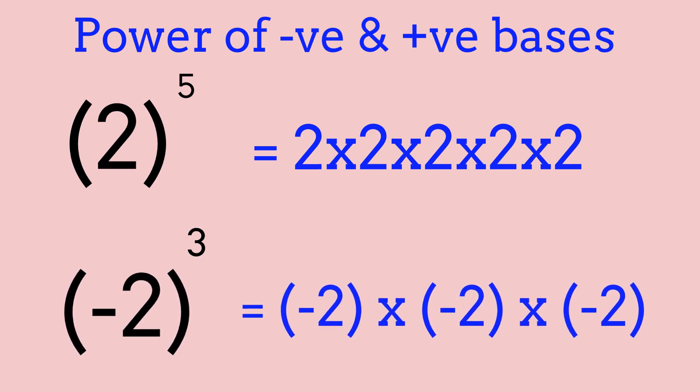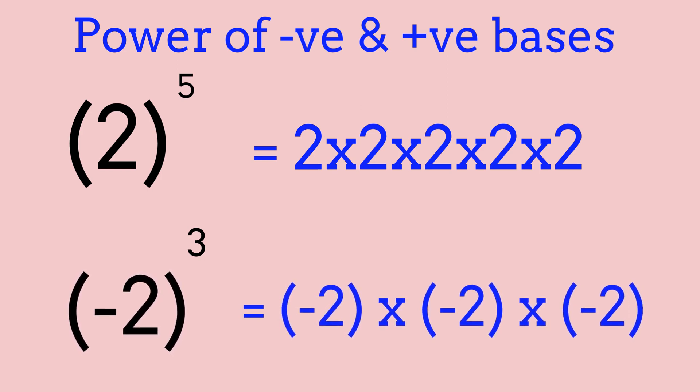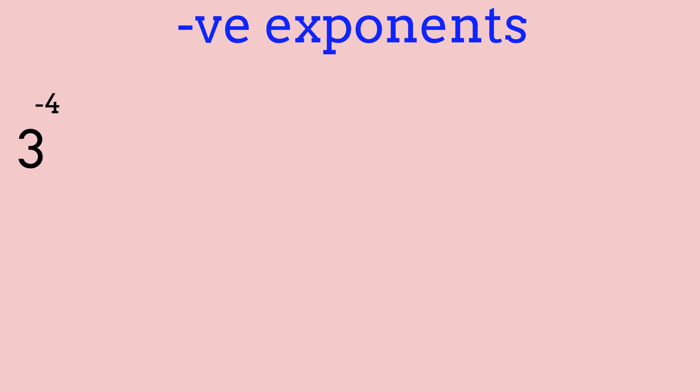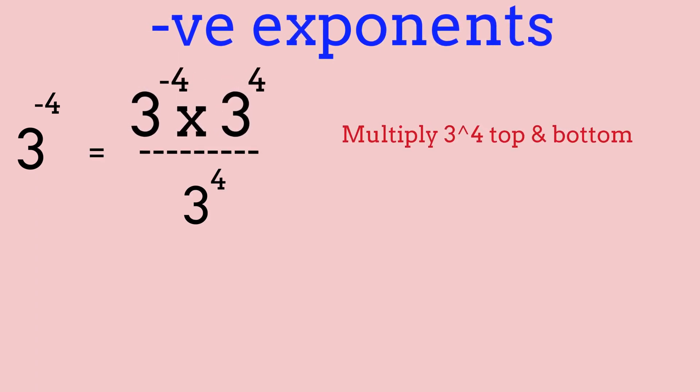For negative base powers, you do need to remember your rules for multiplying negative numbers. So now we're going to be going over what a negative exponent is, and I'm also going to be showing you three rules with powers and exponents. So let's take the problem: 3 to the power of negative 4 times 3 to the power of 4, divided by 3 to the power of 4.